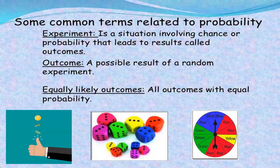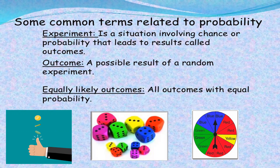Some common terms related to probability: First, experiment — a situation involving chance or probability that leads to results called outcomes. Examples of experiments include tossing a coin, rolling a dice, and spinning a spinner. The result of an experiment is called the outcome. For example, when you toss a coin and it lands on heads, that is an outcome.